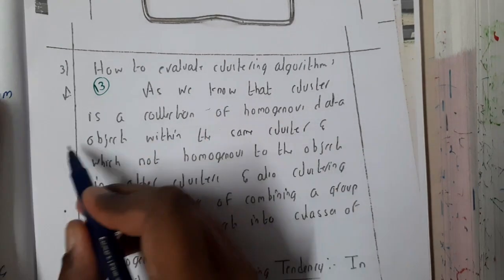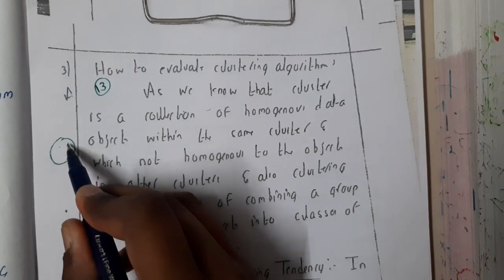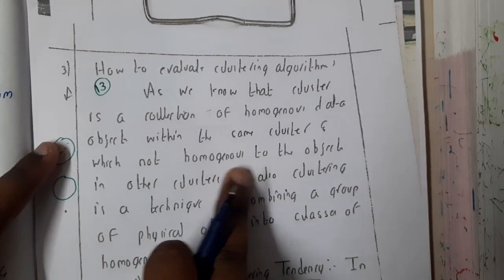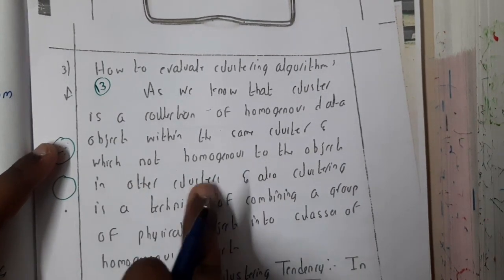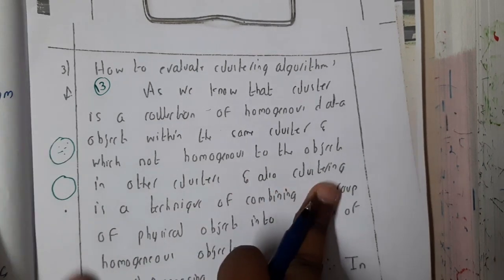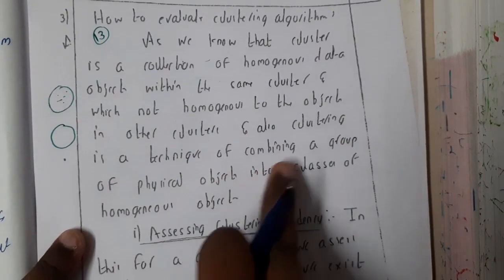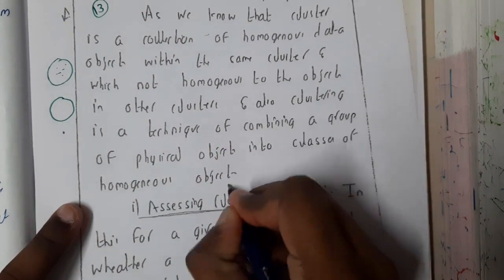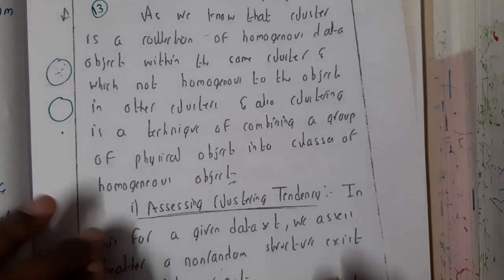Within the same cluster, they are homogeneous. When compared with other clusters, they are heterogeneous. So clustering is a technique of combining a group of physical objects into a class of homogeneous objects. You will be dividing it into classes of homogeneous objects.